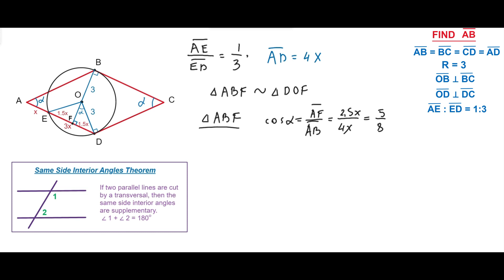Using the most basic formula from trigonometry, let's calculate sine alpha. Sine alpha equals square root of 1 minus cosine squared alpha equals square root 39 divided by 8.